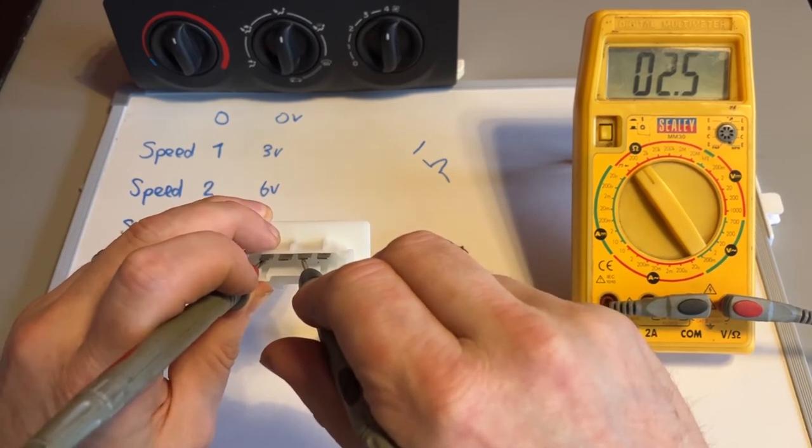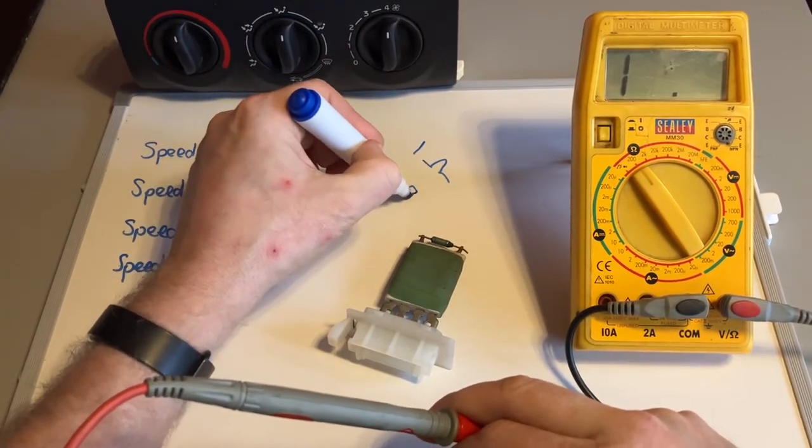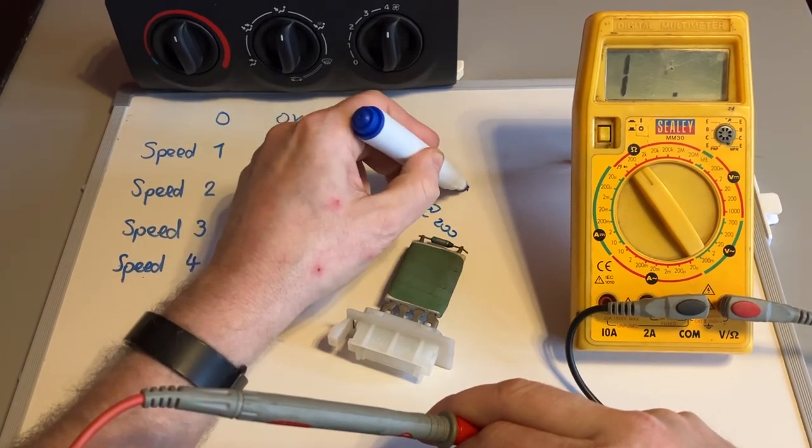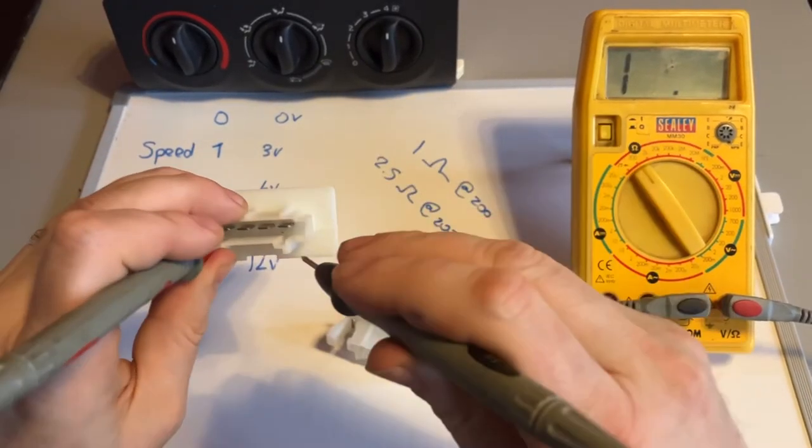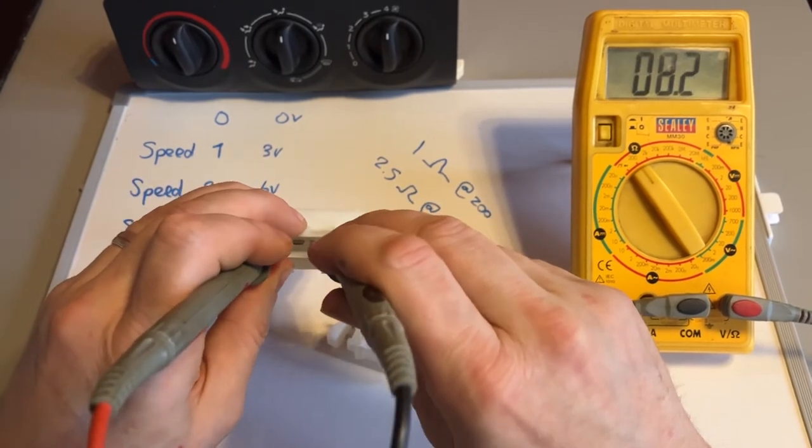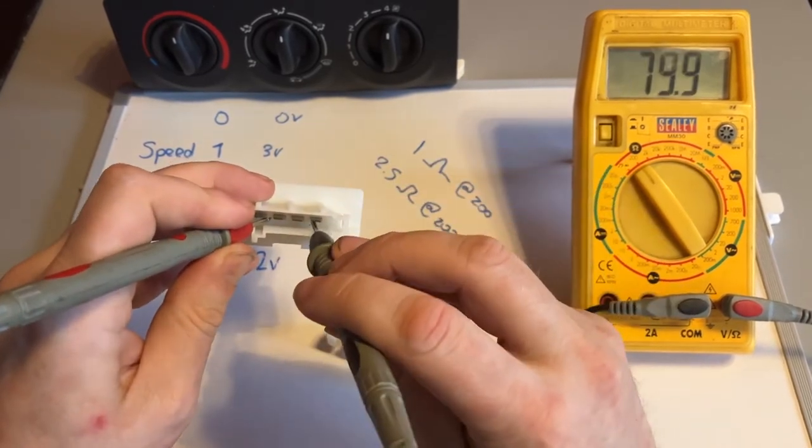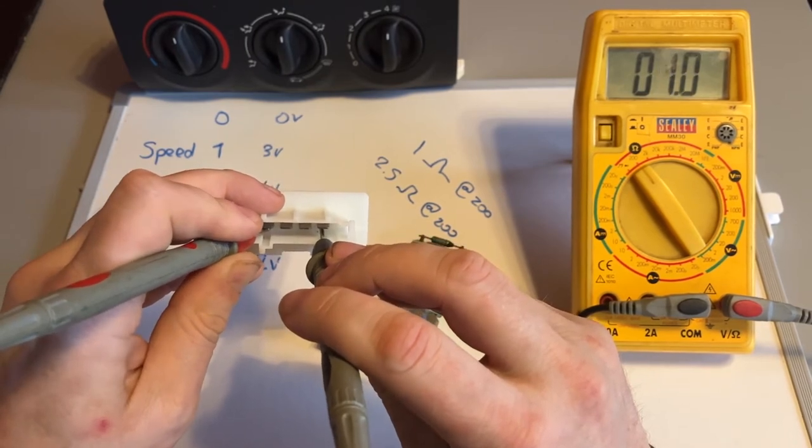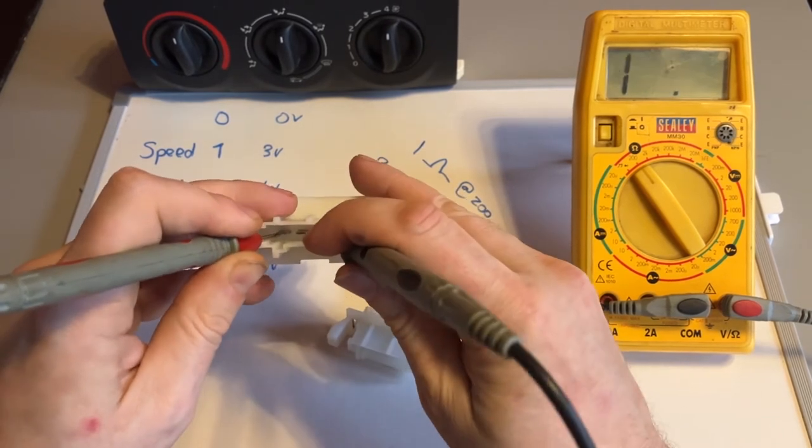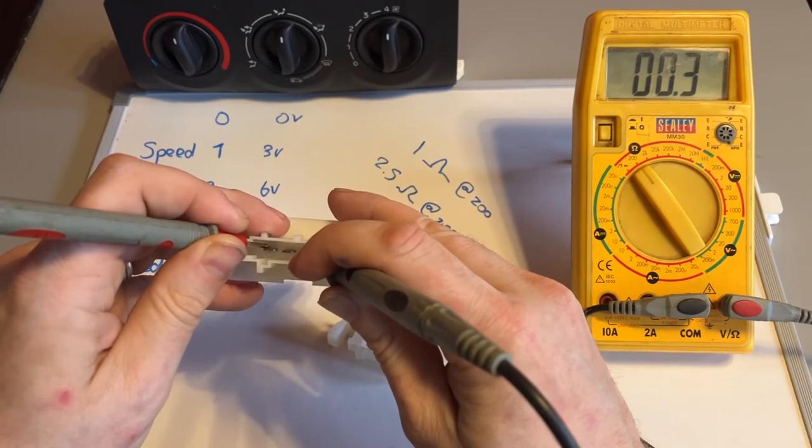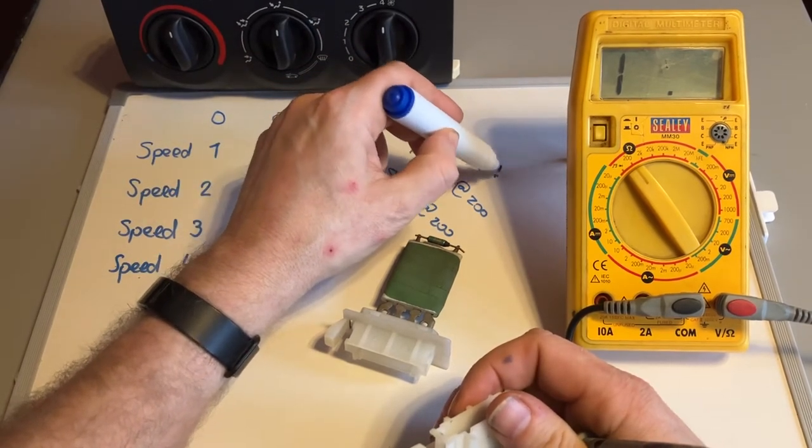Two point five or thereabouts, two point five ohms. And then the third one will be... because they're not necessarily in order, so I'm doing this test so I can show which speed setting's which. Try that again. Got a lot of movement here. Point four ohms or thereabouts. So 0.4 ohms.